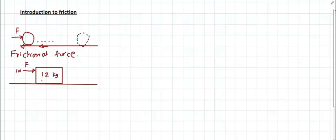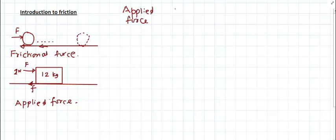It's our common observation that when an object is placed on a surface and you apply a small force, the block doesn't move. The question is: why doesn't it move? You are applying a force but still the block doesn't move. That implies that the moment you apply this force of 1 newton, an opposing frictional force — I'll denote it by lowercase f — comes into play. Since the block does not move and remains in equilibrium, this frictional force is equal to the applied force, so the frictional force is also 1 newton.